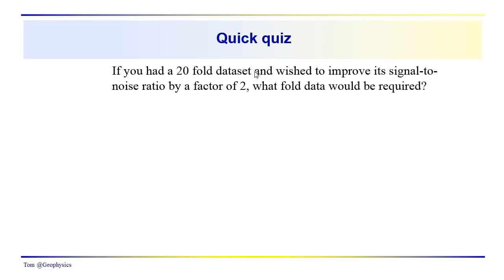Let's say you went out and you collected a 20-fold data set and you didn't quite get the signal-to-noise improvements in signal-to-noise ratio that you wanted, so you'd like to go back and recollect your data or get additional data which would increase your signal-to-noise ratio by a factor of two. The question would be what fold data would be required for you to obtain a two-fold increase in your signal-to-noise ratio.